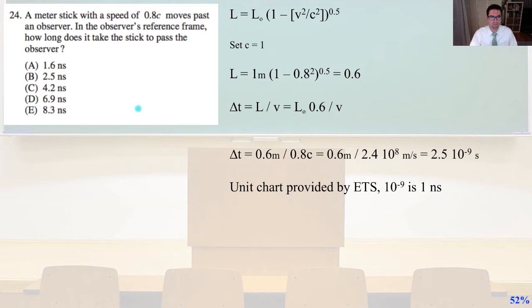The change in time, the time that it takes to pass equals length divided by velocity equals the initial length times 0.6 divided by v. That's going to equal 0.6 divided by 0.8c. And we're going to do some algebra. Remember that c, the speed of light, equals about 3 times 10^8 meter per second. That times 0.8 is the 2.4 times 10^8 in the denominator. That's going to equal 2.5 times 10 to negative 9 seconds. We have our unit chart provided by ETS. 10 to the minus 9 is 1 nanosecond. We have 2.5 times 10 to the minus 9 seconds. That's 2.5 nanoseconds. Answer B.